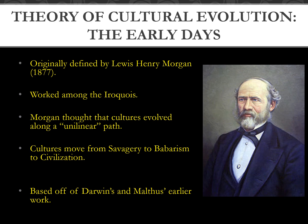Morgan argued that all human cultures start in a stage of savagery — hunting and gathering, without farming or much cultural complexity. Then they move to barbarism, where farming begins and technologies like pottery develop. Finally they reach civilization, which is equated with European and American modern society. You can see how this is very socially laden — it risks implying that other cultures are less civilized and therefore need not be treated as equals.